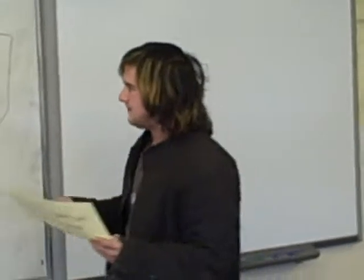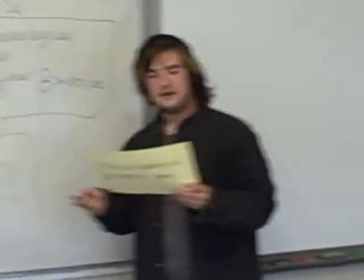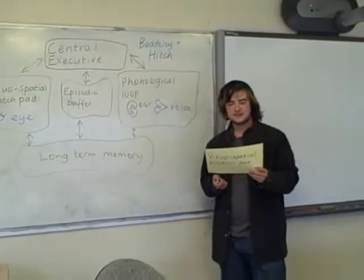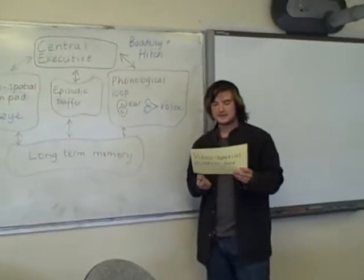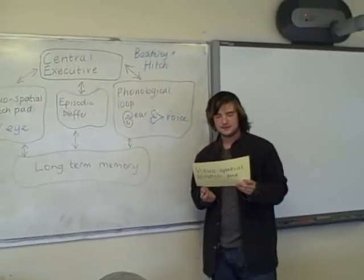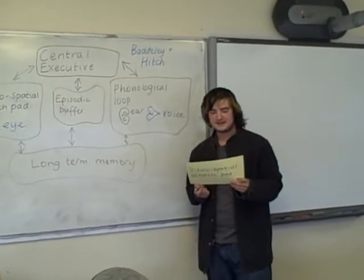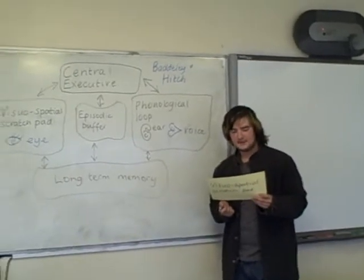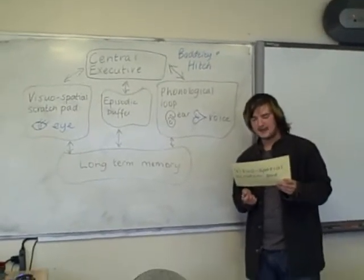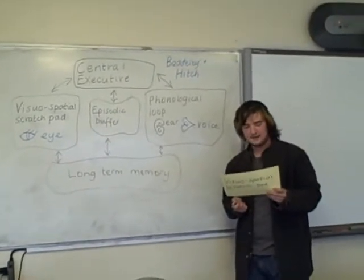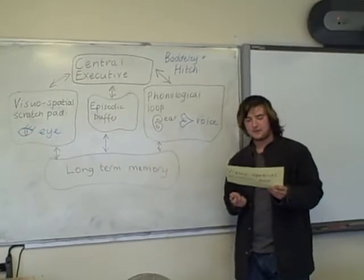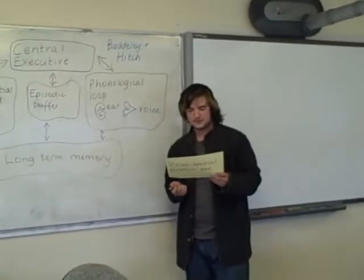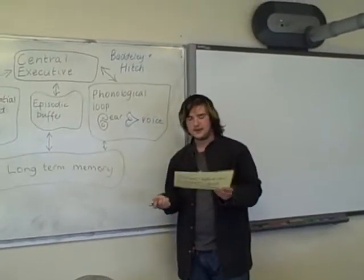The visuospatial scratchpad is about your inner eye, which stores visual and spatial information and has limited capacity. The two systems are independent. For example, when you're buying a new coat and visualising what it would look like on you.